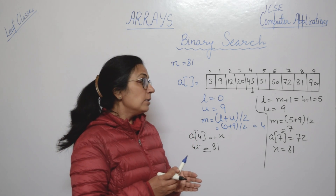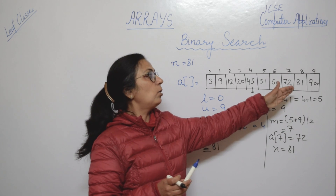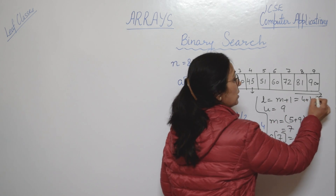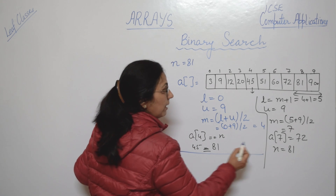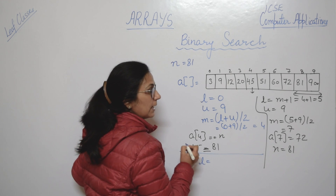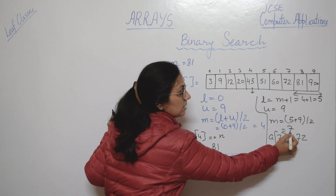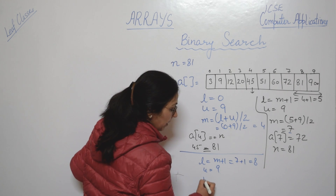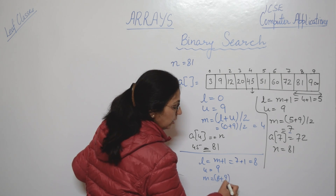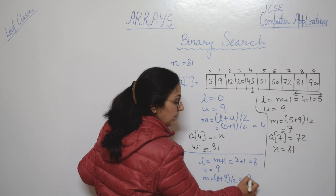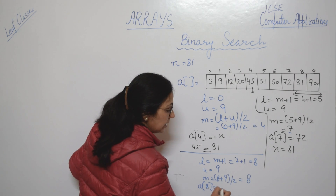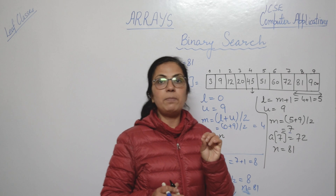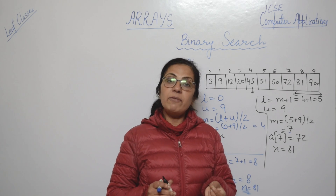We change the lower limit again to mid plus 1, making it 8. Upper is still 9. New mid = 8 + 9 / 2 = 8 (integer division gives 8). We check A[8], which is 81. The number we wanted to search is also 81. So at A[8] we found 81 — the number we were searching for. We break out of the program.